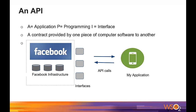An API is essentially a way for programmers to communicate with a certain application. In other words, an API is a specification or contract written by providers of a service that programmers — for example, application developers — must follow when using that service. It describes what functionality is available, how it must be used, and what formats it will accept as input or return as output.